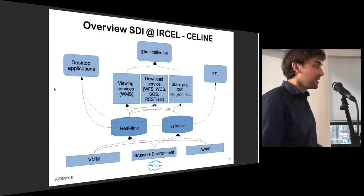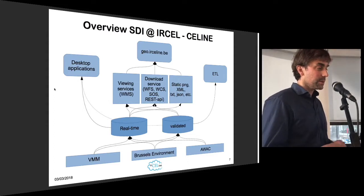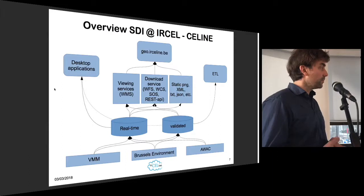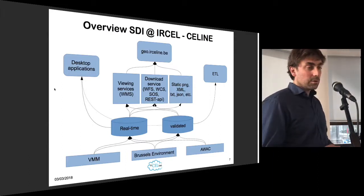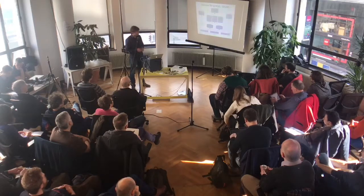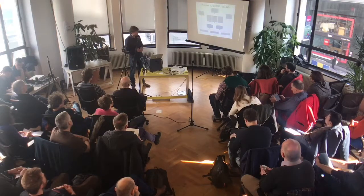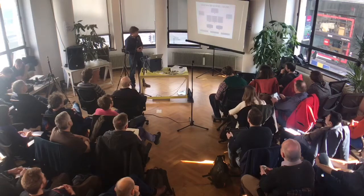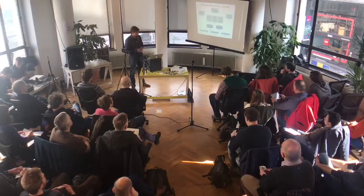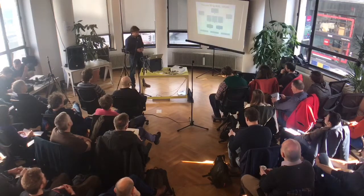Our solution to that is to have two separate databases. On top of that, we have a service layer of viewing services like a WMS web map service, or more downloading-oriented services like WFS, a feature service, WCS the coverage service, and an SOS, a sensor observation service, and a REST API for faster access to time series data.